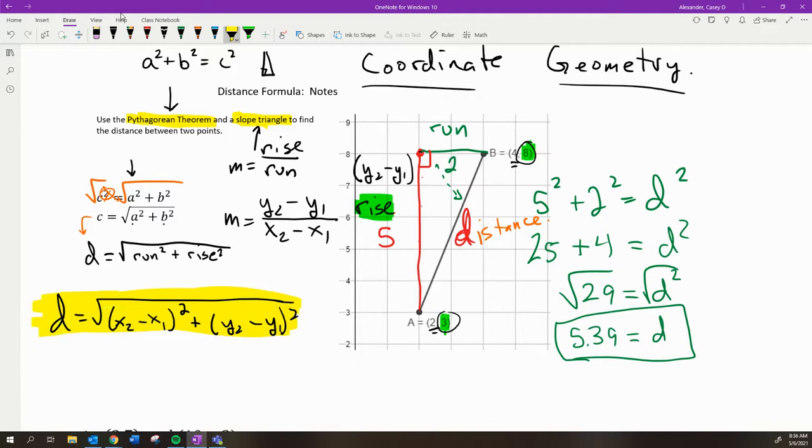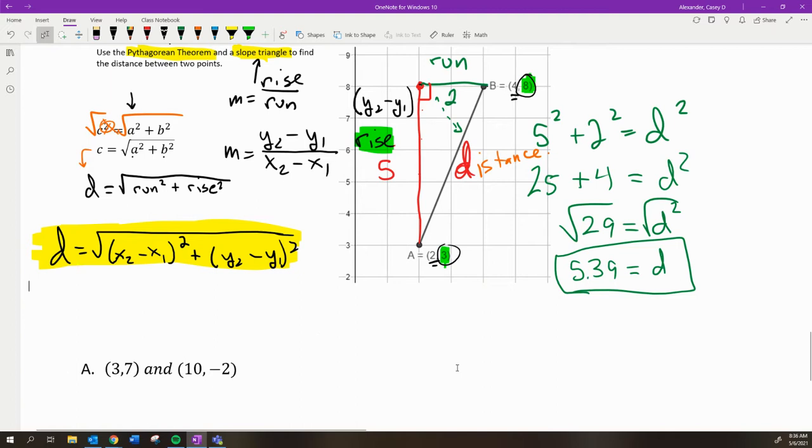So let's do one example, this one here, where we actually find the distance between these two points without graphing. So I'm going to find the distance between (3, 7) and (10, -2). And I'm going to do so using the distance formula. So I need to do the run squared. And the run goes from 3 up to 10. And that's a difference of 7. It's an increase of 7. But the way that I would show that is I would do 10 - 3.